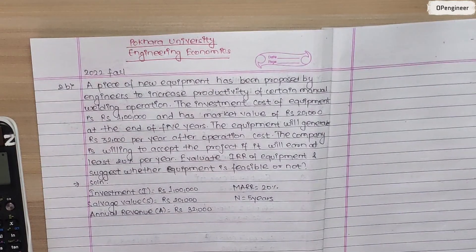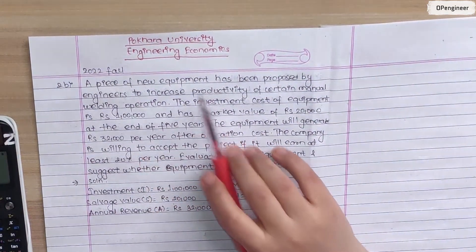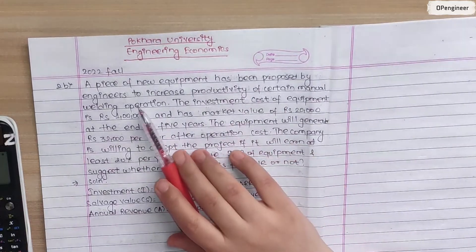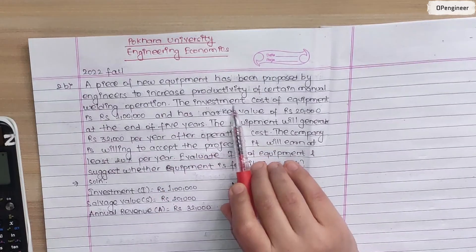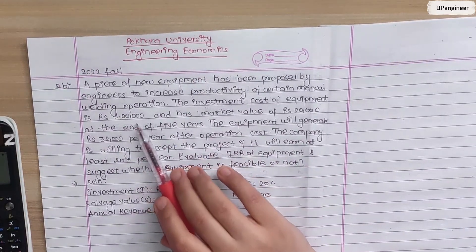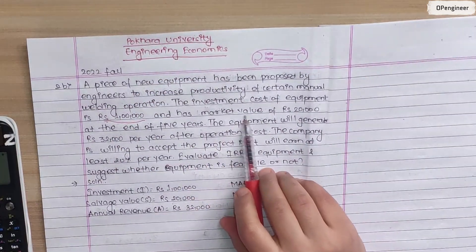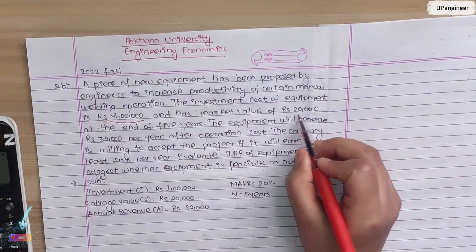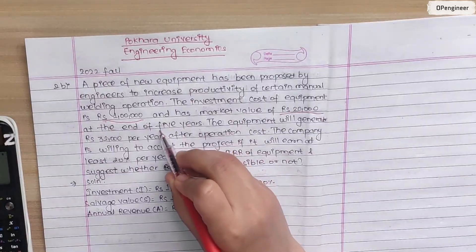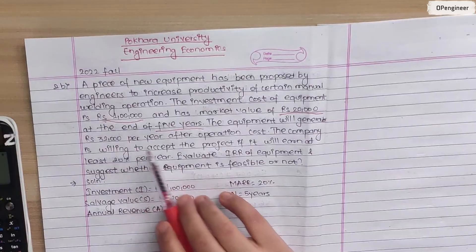Engineering Economics, Pochary University 2022 Fall exam question. A piece of new equipment has been proposed by engineers to increase productivity of certain manual welding operation. The investment cost of equipment is rupees one lakh, and has market value of rupees 20,000 at the end of five years.